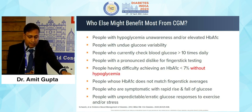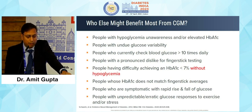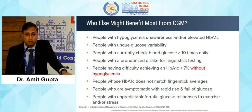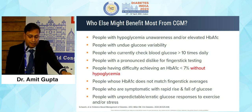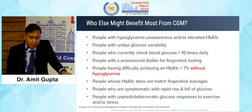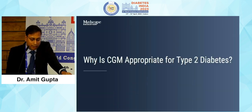ADA indications include: people who experience hypoglycemia unawareness or elevated HbA1c; people with undue glucose variability; those who check blood glucose multiple times a day; those with pronounced dislike for finger stick testing; people having difficulty achieving HbA1c without hypoglycemia; those whose HbA1c doesn't match finger stick averages; those asymptomatic with rapid glucose rises and falls; and people with unpredictable erratic glucose responses to exercise and stress.